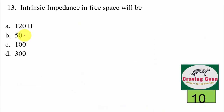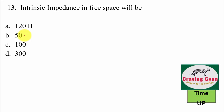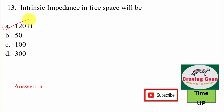13th question: intrinsic impedance in free space will be — here I have made an assumption that epsilon_r equals 1 and mu_r equals 1. We know that intrinsic impedance eta is approximately equal to 377, which equals 120 pi, hence the suitable option is option number A.